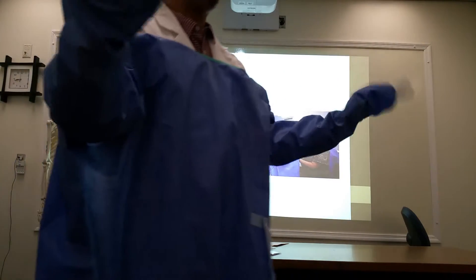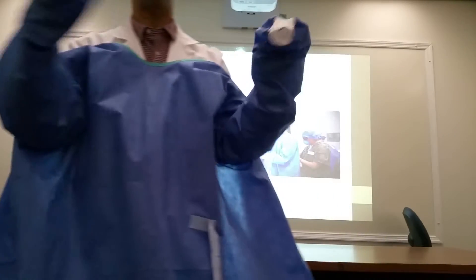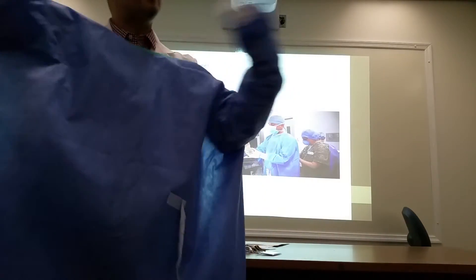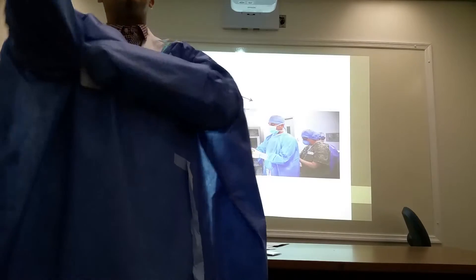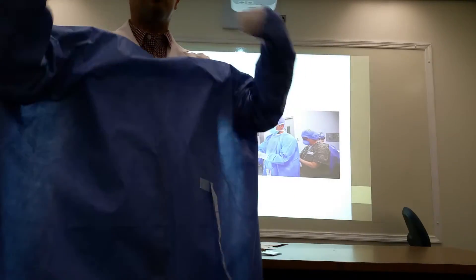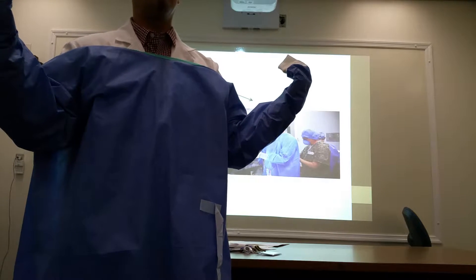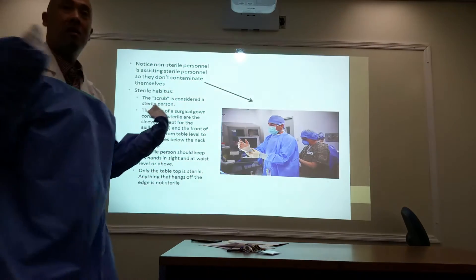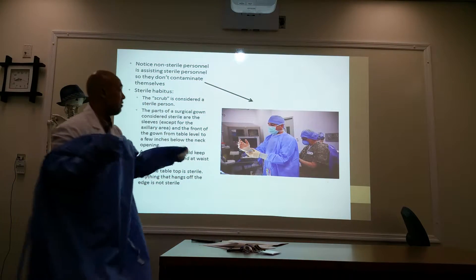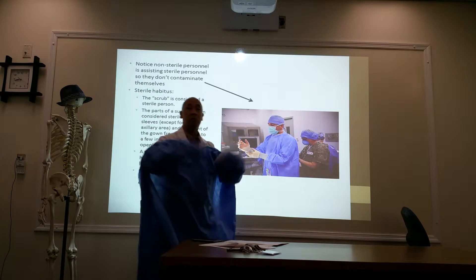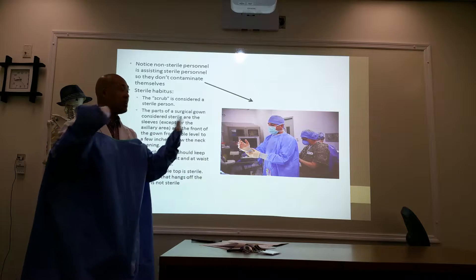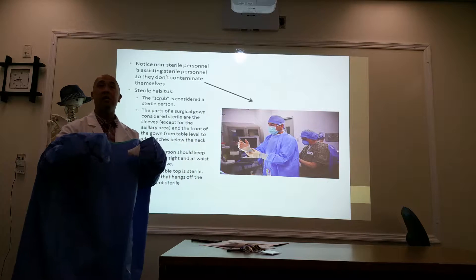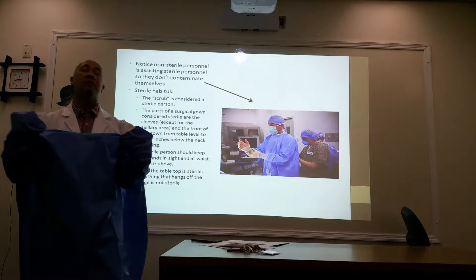These sterile gowns are for single use only — once you're done, you toss them. They're packaged sterilely in a special type of packaging. Notice there are ties on the back, so the non-sterile personnel ties up the scrub personnel. The sterile person can't tie themselves up because what's exposed at the back is their non-sterile scrubs — if they reached back, they would contaminate themselves.